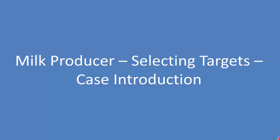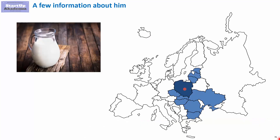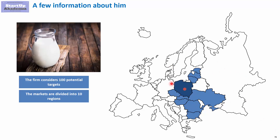Milk producer - selecting targets - case introduction. We'll try to help a milk producer that wants to grow via M&A select potential targets. Since he's considering 100 potential targets, we'll have to create a ranking. He is located in Poland and is considering 100 potential targets all over Eastern Europe. The market is divided into 10 regions and he has different preferences for those regions.